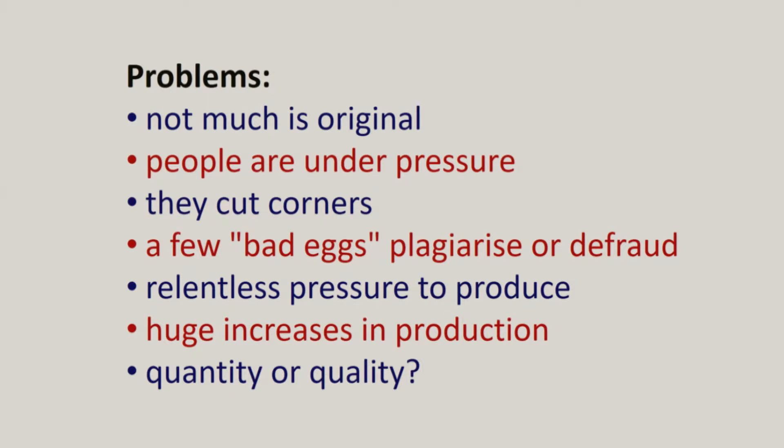There is in modern science a relentless pressure to produce, always to do more research, always to publish more. And this has resulted in huge increases in apparent productivity. But is it quality or is it quantity? Of course, we would like it to be both — an increase in the number of papers published, but with very high quality. So one of the tasks of research appraisal is to try to ensure that we identify good quality and induce the producers of research to always aim for high quality.